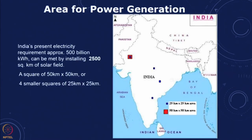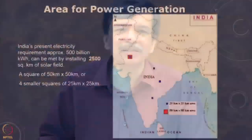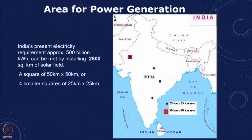To make a calculation of the total electricity required, we can take that electricity divided by the DNI, account for the efficiency of the cell, and calculate the area required. For instance, for 500 billion kilowatt hours, this can be met by installing about 2500 square kilometers — roughly 50 by 50 kilometers, or four smaller squares of 25 by 25 kilometers. The selected location has the highest insolation in terms of DNI, is a desert, and has relatively low population density.